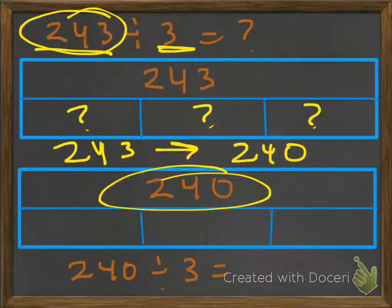So in other words, 240 divided by 3. And this becomes much simpler, especially if you know what 24 divided by 3 is, which is 8. So each of them will have 8, but since there's a 0, we're going to have a 0 right here in each one of these. So in other words, 240 divided by 3 is 80.